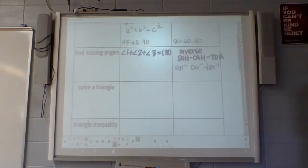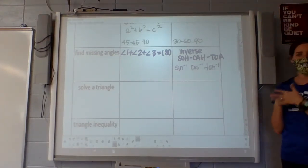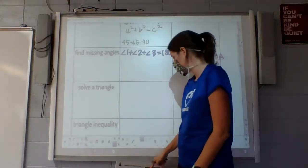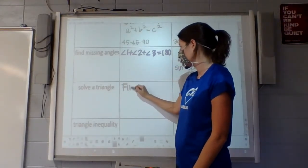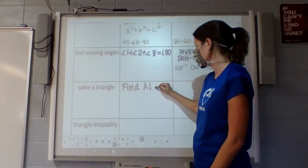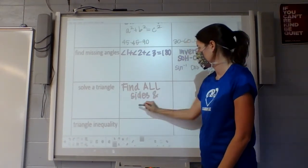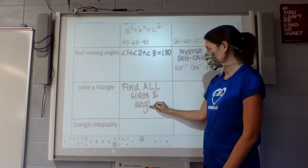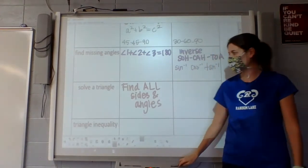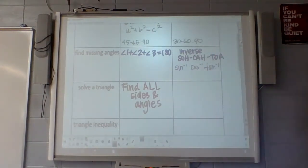Now, if the directions just say solve a triangle, what's that telling you to do? Find everything. So, find all the sides, all the angles. So, if you see the word just solve a triangle, it's saying basically find everything. So, that probably means using the two things above.